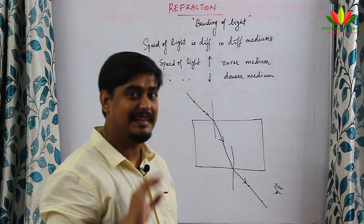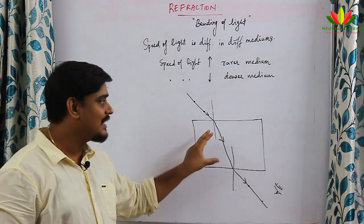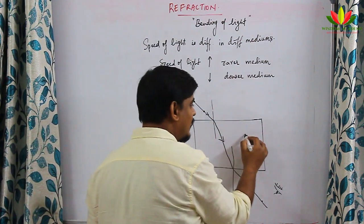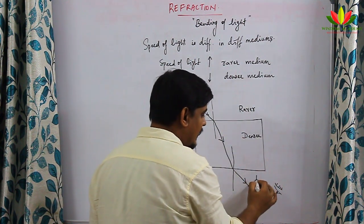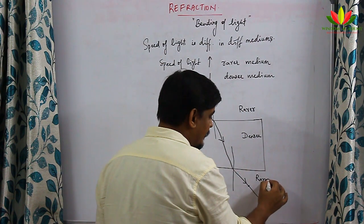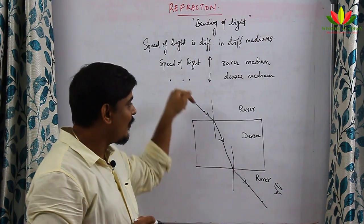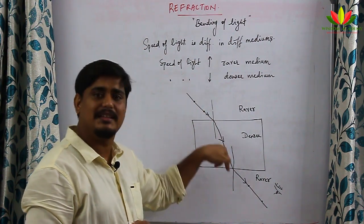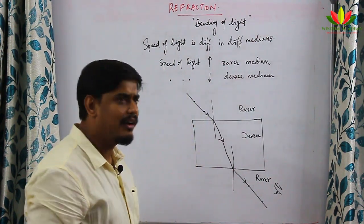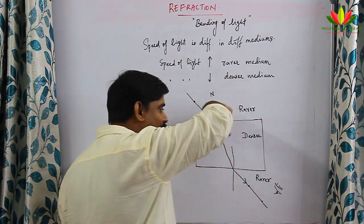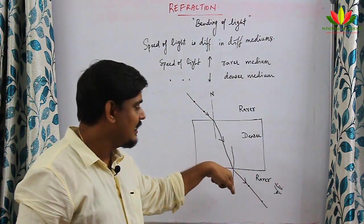Technically: the glass slab is a denser medium, and air on both sides is a rarer medium. When the light ray passed from a rarer medium to a denser medium, the velocity changed, so it bent towards the normal. It then traveled in a straight line through the glass.